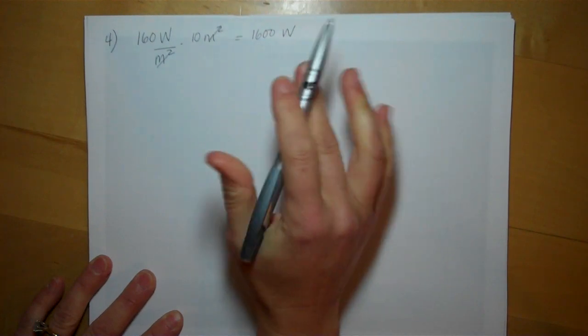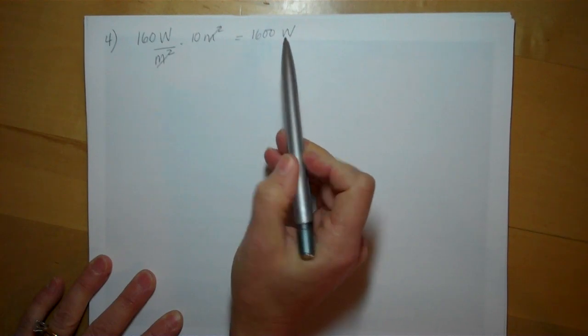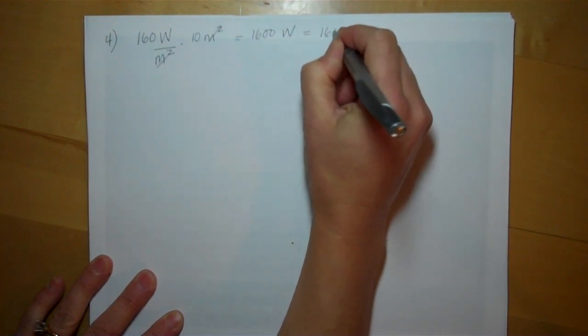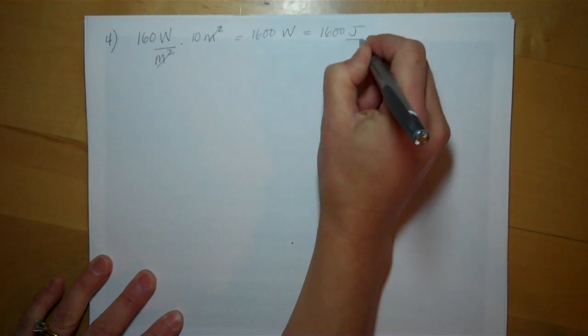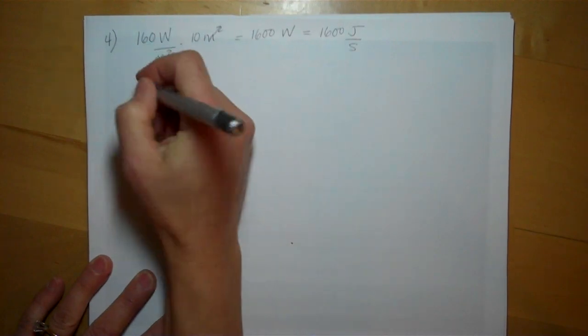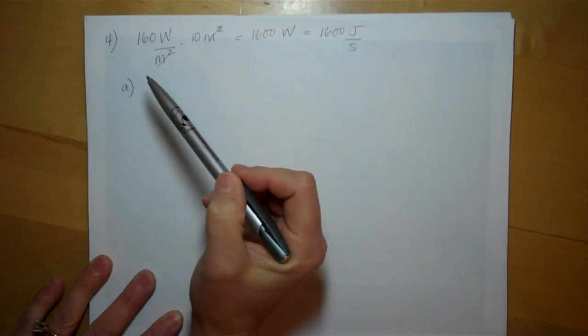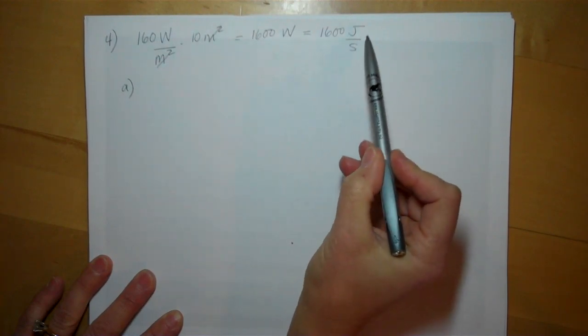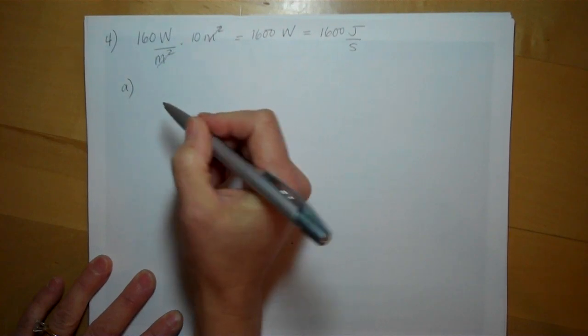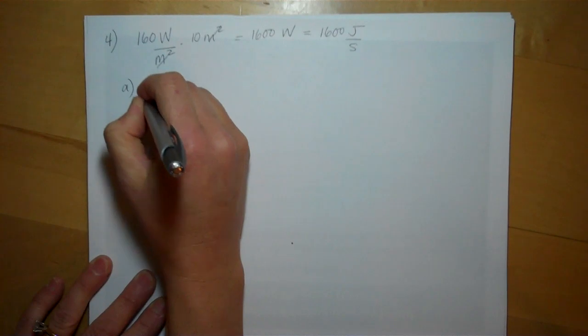You'll recall a watt is the same as a joule per second, so this is 1600 joules of energy per second on average. But question A asks: how much energy could be gained in one year in this manner? This is only per second, so this is going to take a lot of conversion factors that you already know.